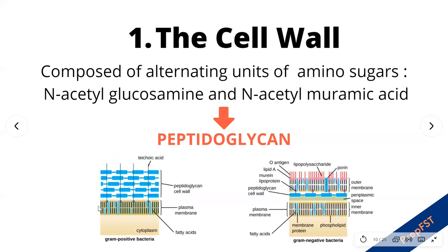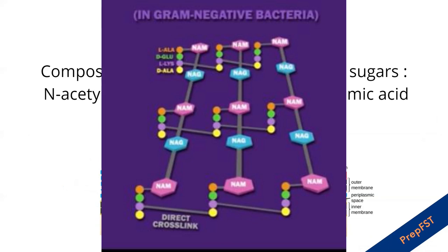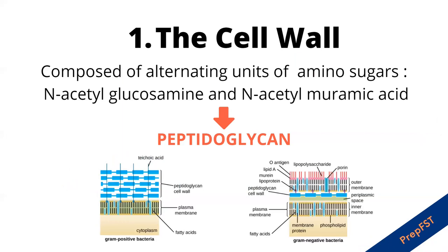Gram negative cells have a very thin peptidoglycan layer with fewer peptide cross-links and no strengthening teichoic acid, making them much weaker. External to the peptidoglycan layer is a layer of lipoprotein, phospholipid, and a polymer unique to gram negative cell walls known as lipopolysaccharide. This lipopolysaccharide is the reason that when we add a decolorizer to gram negative cells they completely lose their stain, because lipopolysaccharide is soluble in the decolorizer.